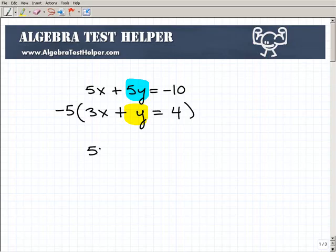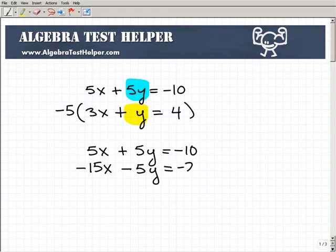So this is going to be our first equation, 5x plus 5y equals negative 10. And our second equation is going to be, I have to multiply everything by negative 5. So this will be negative 15x minus 5y. And that's the whole idea of multiplying by negative 5. And this will be negative 20. All right, so now we're in good shape. Because now I have opposites, and this is where the elimination part of the name of this particular method comes in.